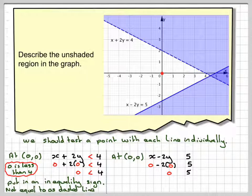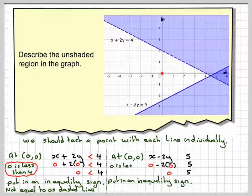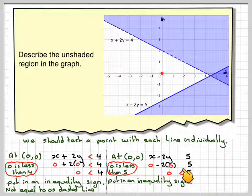Again we need to put in an inequality sign such that that's correct. We know that 0 is less than 5 so we'll put in the sign the right way around.